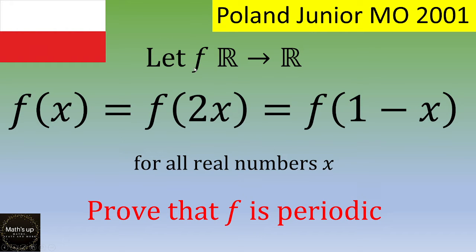Let f be a function from the set of real numbers to itself, such that f(x) = f(2x) = f(1-x) for all real numbers x. We want to prove that f is periodic.